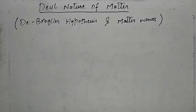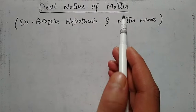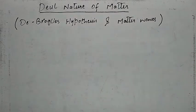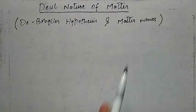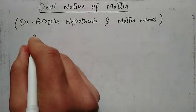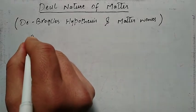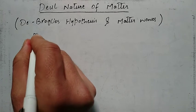Assalamu alaikum students. Today our topic is dual nature of matter. In this topic we have to study de Broglie's hypothesis and matter waves. Before going to this topic, we should discuss about the nature of light, which we have already studied.